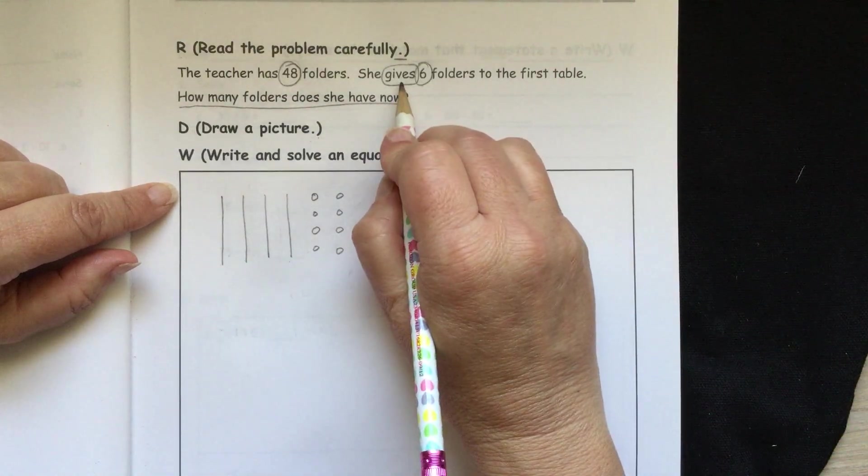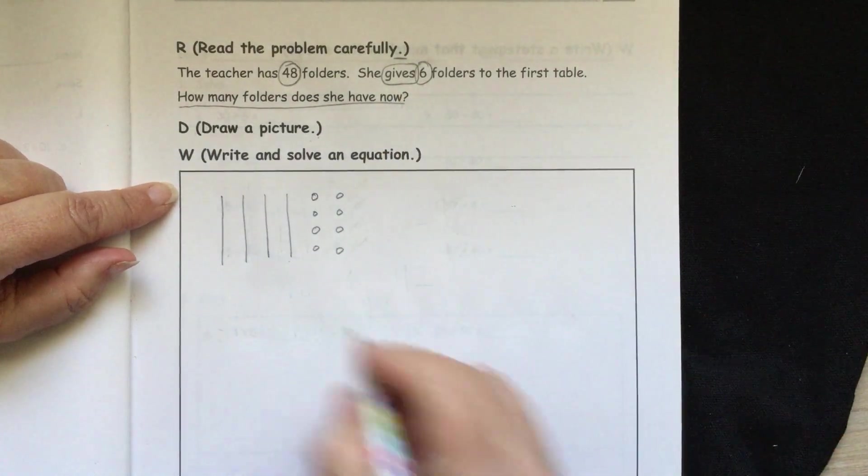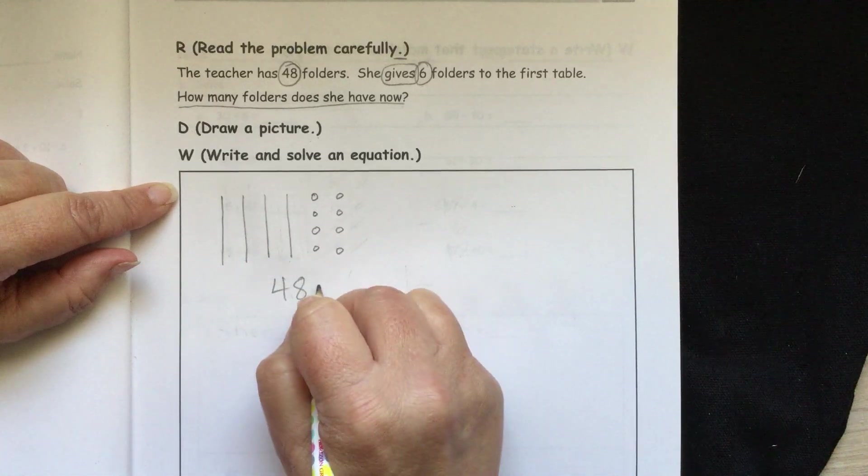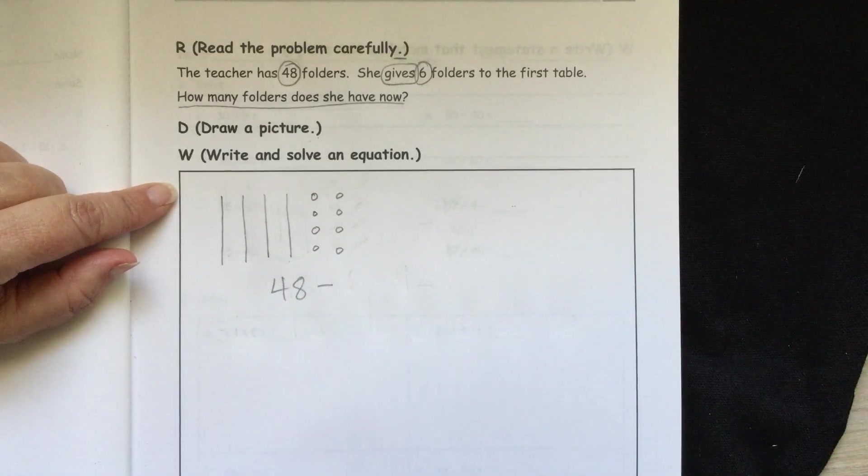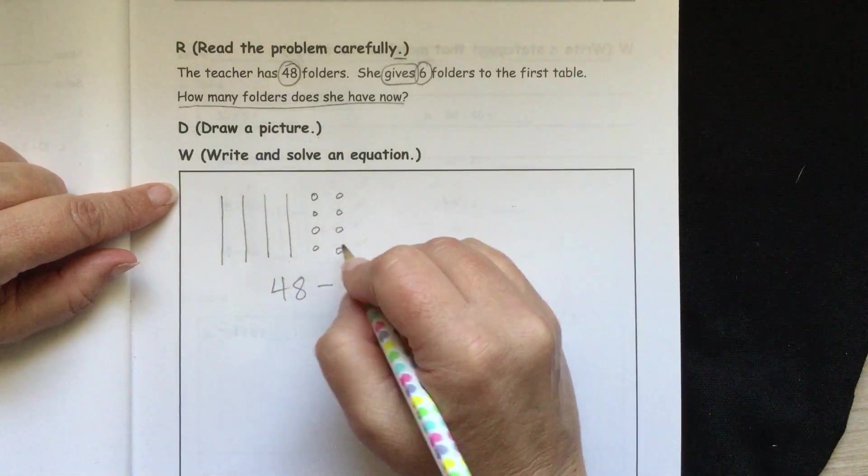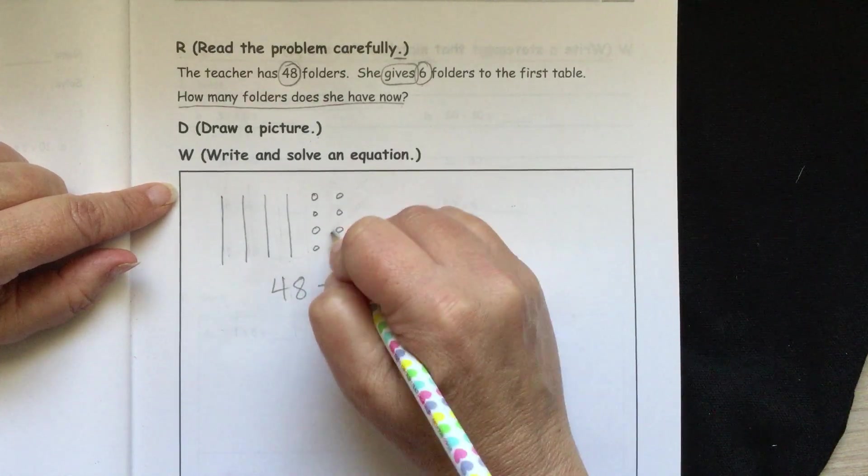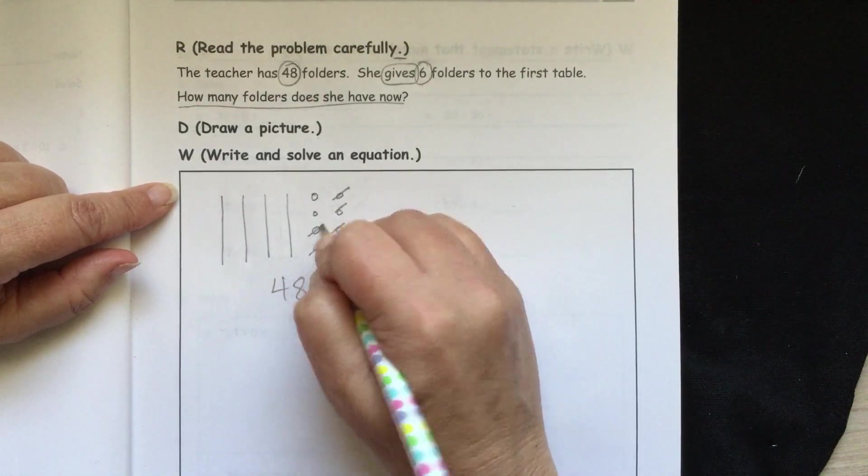And then we have 8 in our ones column. So we're going to draw 8 ones. 1, 2, 3, 4, 5, 6, 7, 8. And then she gives away 6. Now let's write 48 here and she's giving away 6. So that means we're subtracting. Now let's take them away. 1, 2, 3, 4, 5, 6.